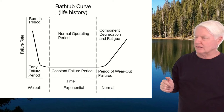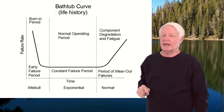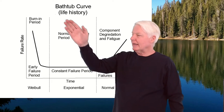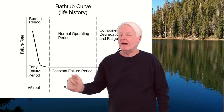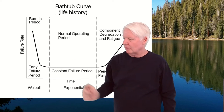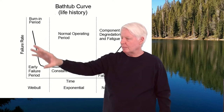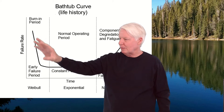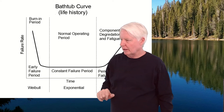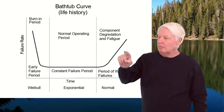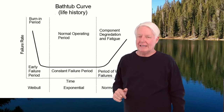This is the bathtub curve, and you can see why they call it that — it looks like the cross-section of a bathtub. They break it into three areas of study. One is the burn-in period, also known as the early failure rate period, or decreasing failure rate over time. It's also called the infant mortality period. We use the Weibull distribution to model this part. The Weibull can model the whole bathtub curve, but it's not the most user-friendly, so we usually divide it into three areas.